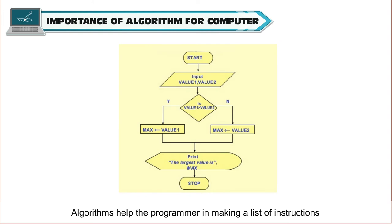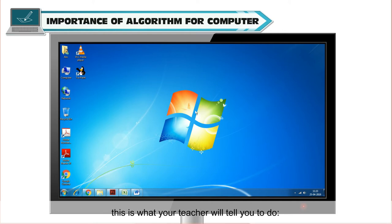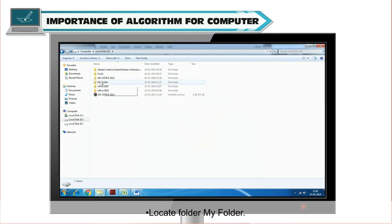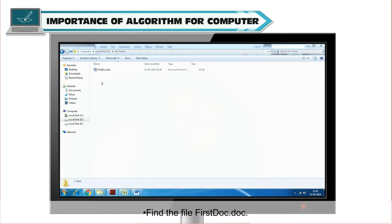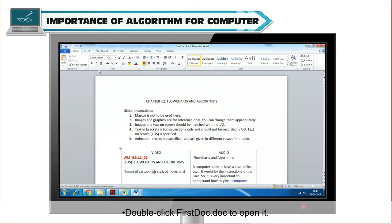Algorithms help the programmer in making a list of instructions that must be given to the computer to perform any task. For example, if you are learning how to open a file using Windows File Explorer, this is what your teacher will tell you to do: open Windows Explorer, locate drive D, locate folder My Folder, find the file firstdoc.doc, double-click firstdoc.doc to open it.